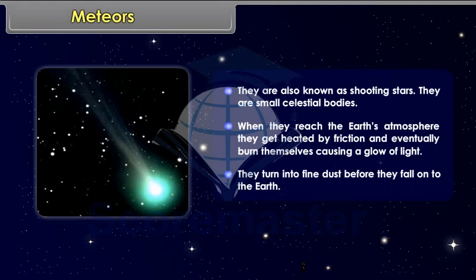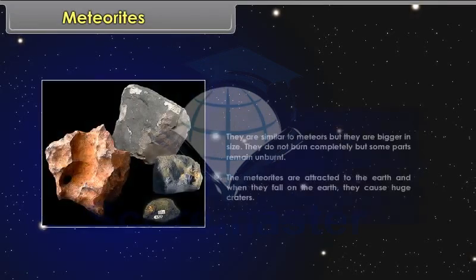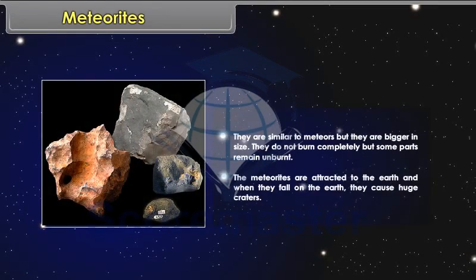Meteorites. They are similar to meteors, but they are bigger in size. They do not burn completely, but some parts remain unburnt. The meteorites are attracted to the Earth, and when they fall on the Earth, they cause huge craters.